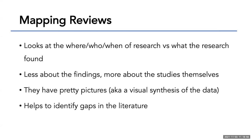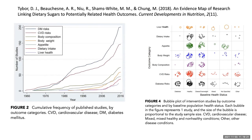Mapping reviews are really interesting because they look much more at the where, the who, and the when of research versus the research results themselves. I like them because they have really pretty pictures — visual syntheses of the data — and these are done to help identify gaps in the literature because you can visually see them. For example, one evidence map linking dietary sugars to health outcomes shows how many studies on different topics were published over certain years. On the bubble map, the more bubbles, the more well-covered that particular topic is; the fewer bubbles, the less covered — so you can clearly identify gaps in the literature.